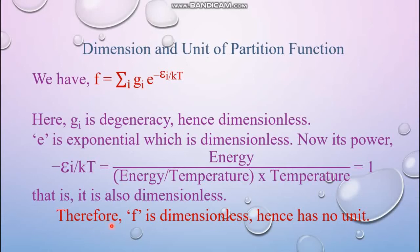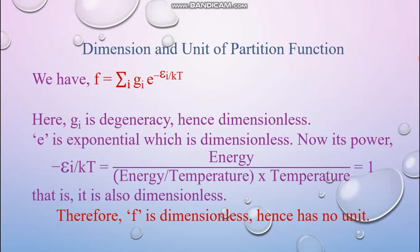What is the dimension and unit of F, the partition function? If we try to find out the dimension, it will be found that it is dimensionless. Because the expression accompanies Gᵢ and an exponential part: Gᵢ is simply a number — the number of subshells in a particular energy level — so it is dimensionless. The exponential part should also be dimensionless, and its power is dimensionless because in the numerator you have an energy term and in the denominator you also have an energy term (k × T = energy). So energy divided by energy is dimensionless, and overall F is dimensionless.